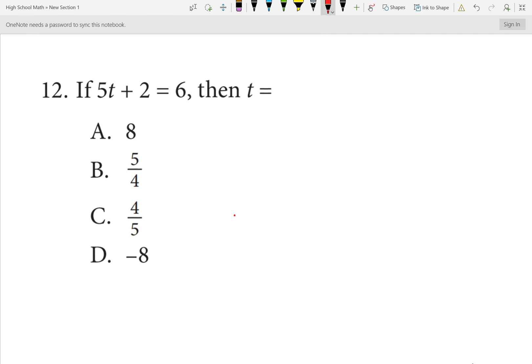Number 12. If you missed this one, I no longer know you. 5T plus 2 is equal to 6. Subtracting 2 on both sides leaves 5T is equal to 4. Dividing by 5, T is 4 over 5. If you missed it, just lie to me please. Number 12 is C.